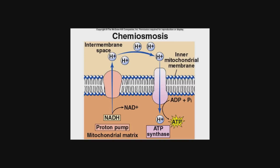So because we have driven protons outside of the mitochondrial matrix, we have created an area of high concentration of hydrogen ions or protons in the intermembrane space and a relatively low concentration in the mitochondrial matrix. And we know particles diffuse from areas of higher concentration to lower concentration. So naturally these protons want to return back to the mitochondrial matrix.